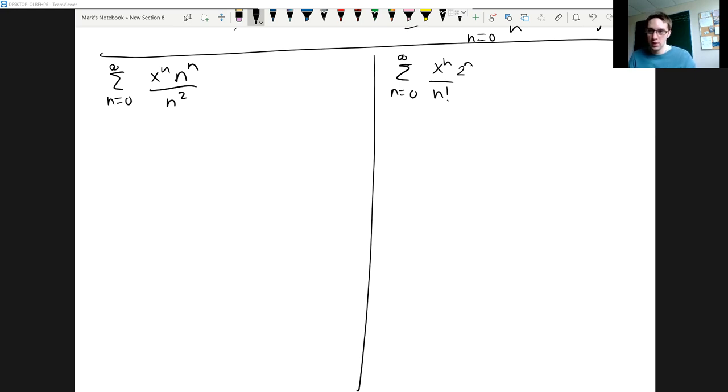Sometimes you'll get a radius of zero, sometimes you'll get a radius that is infinite. Okay, so let's work these out.